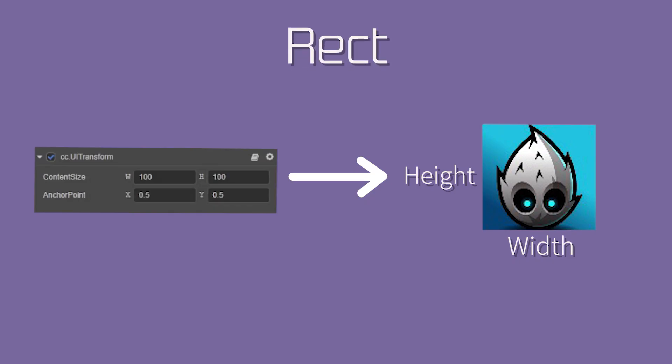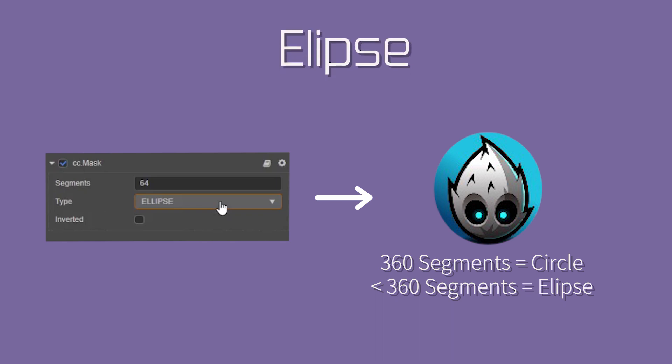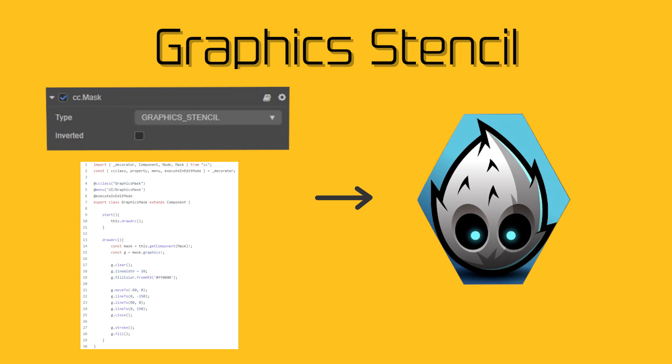Rect makes the mask fit the content size of the UITransform. Ellipse allows you to build a circle depending on how many segments you want, with 360 making a complete circle, and anything lower becoming an ellipse. The Graphics Stencil allows you to programmatically draw shapes for your mask.